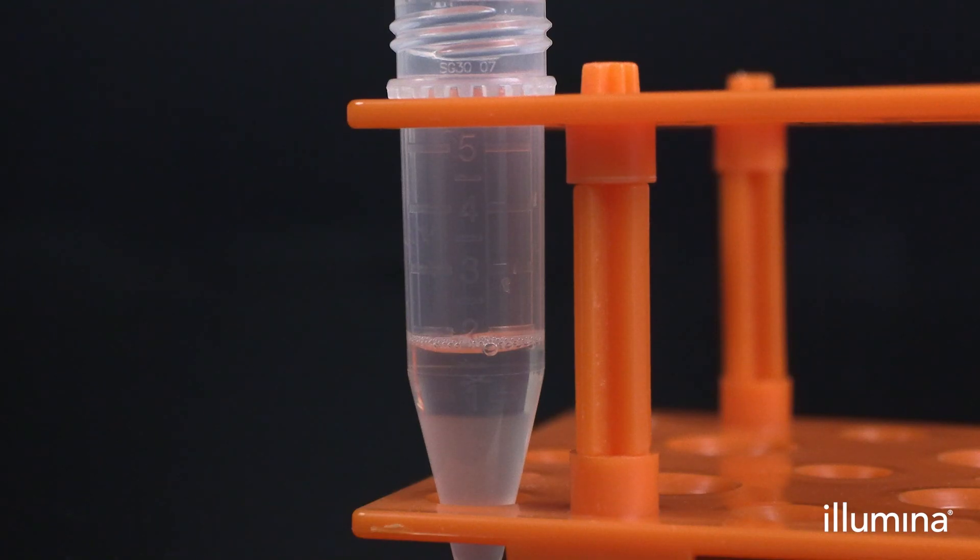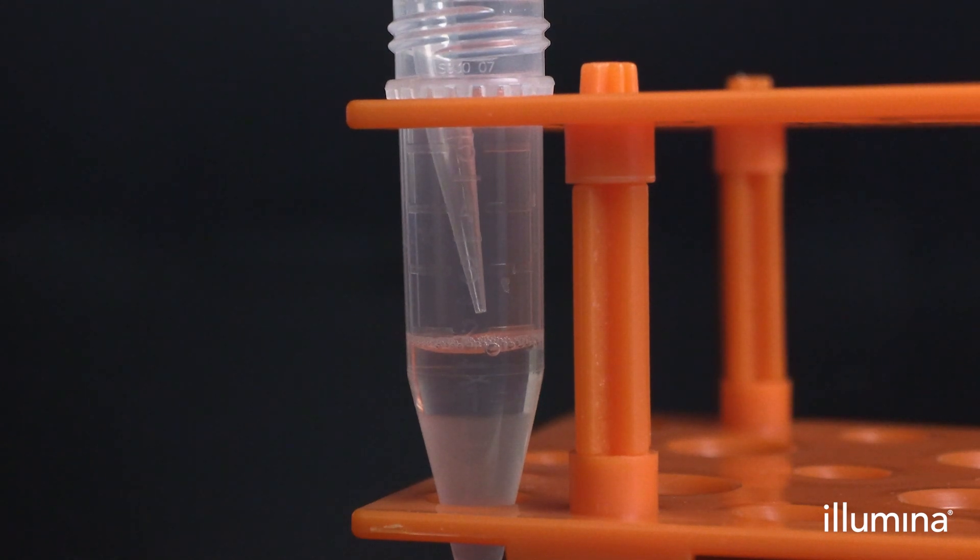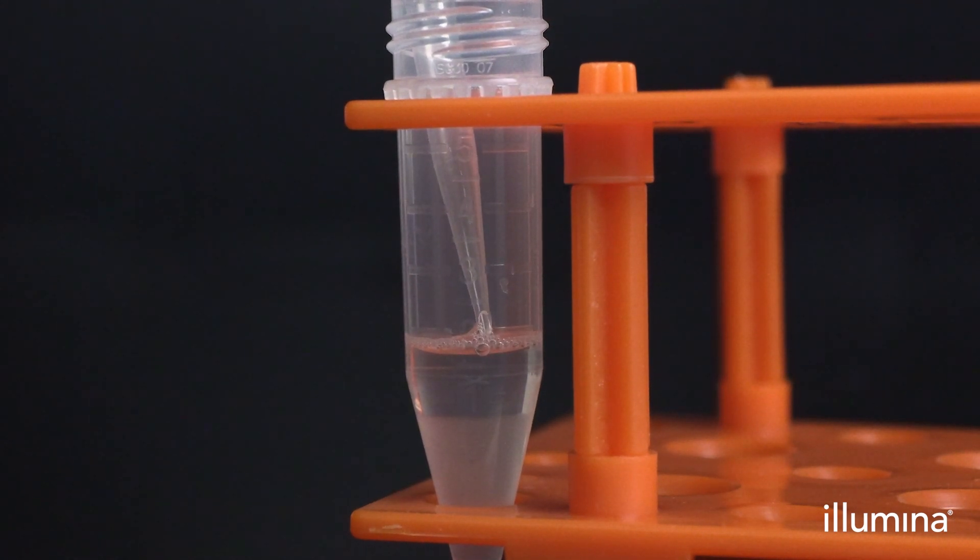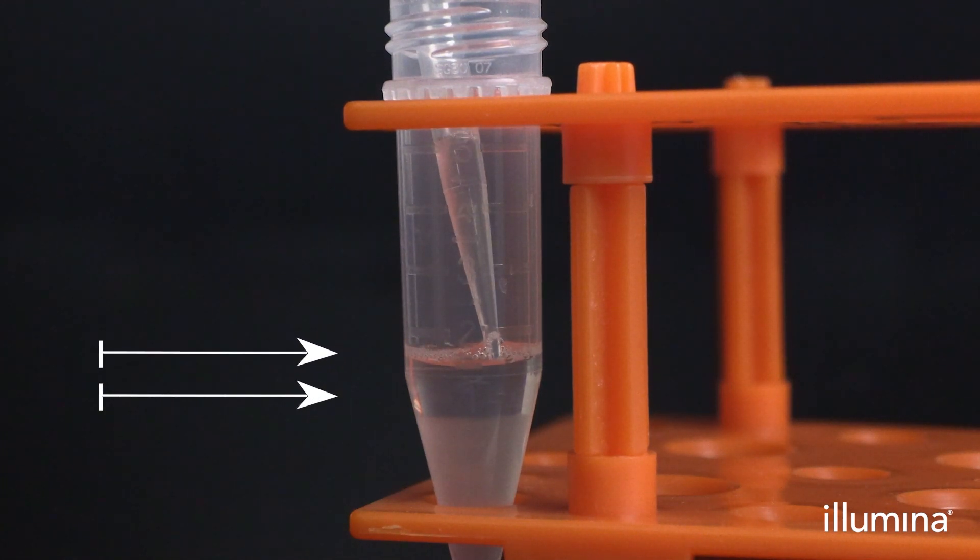After the fourth and final wash, transfer and pellet the PIPs in a 5 ml tube by centrifuging for 2 minutes at 750 g in a swinging bucket centrifuge. Next, use a P1000 pipette to remove the remaining supernatant to the 1 ml volume marker on the 5 ml tube, being careful not to aspirate or disturb the packed PIPs pellet.